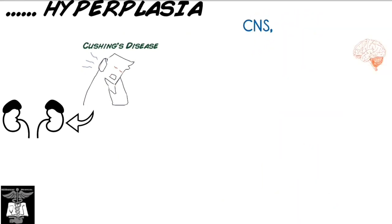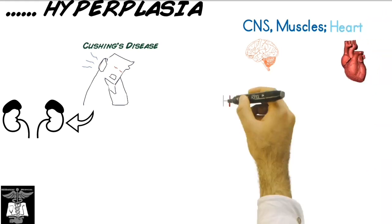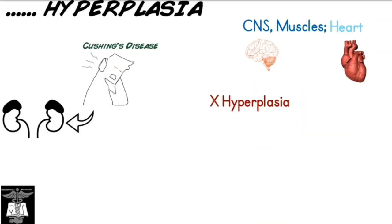It should be noted that the central nervous system and muscle, which includes the heart, cannot undergo hyperplasia. When these tissues are placed under increased cell stress, they can only undergo hypertrophy.